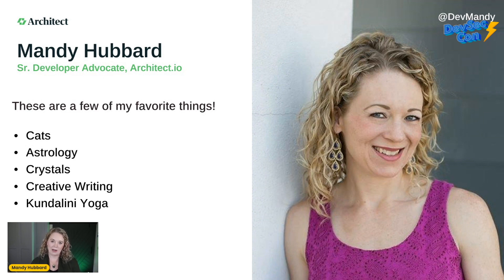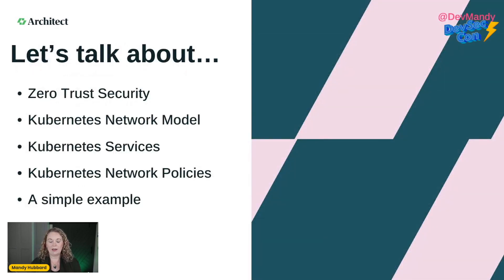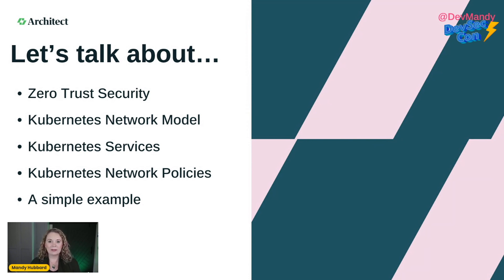I like developing software, I like quality, I like processes. But I do have some more human interests — I really like cats, especially my cat Theo, crystals, astrology, kundalini yoga, and a bunch of woo-woo stuff that rounds out my technical edges. Today we're going to talk about Zero Trust Security: the zero trust security model, the Kubernetes security model, a brief intro to Kubernetes services, Kubernetes network policies, and then a simple example to walk through the types of policies you'd want to implement.